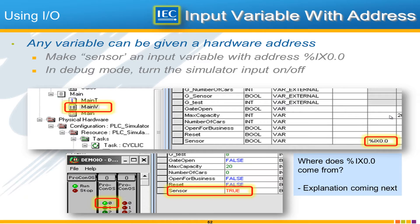Input 0 is already configured in the system as address %IX0.0. All you have to do to make the tie between a physical input and a variable is give it an address in the address column. So we can do that with our input called sensor — give it an address in the address column — and then we'll be able to turn that sensor on and off with the physical input. We'll explain later why IX0.0 and where that letter X comes from.